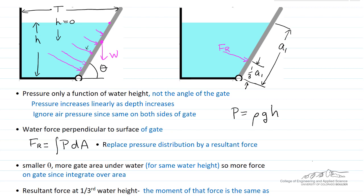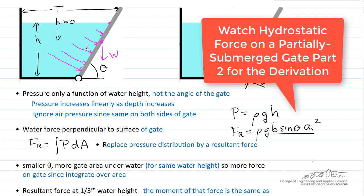In the next screencast, we'll do the calculations to determine the value of FR and to show why the location is one-third of A1, but I'll give the answer here for FR: rho G B sine theta A1 squared over two, where B is the width of the gate, which we're going to use as one meter.